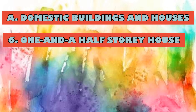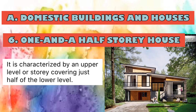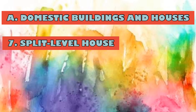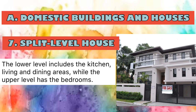Number six is the one-and-a-half-story house, characterized by an upper level covering just half of the lower level. This may also become a split-level house if half of the ground level is higher, halfway between the ground level and the upper level. The windows in the upper level provide light and ventilation. Number seven is the split-level house, which has two main levels. The lower level includes the kitchen, living, and dining areas, while the upper level has the bedrooms, separated by about half or less than a half-story.